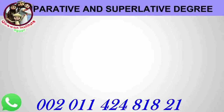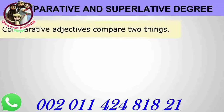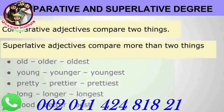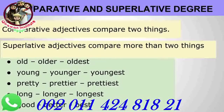Coming to comparative and superlative degree, it's called Ismu Tafdeel. Comparative adjectives are used when we compare between two things, and superlatives are used when we compare more than two things. This is the simple rule for how we use comparative and superlatives.